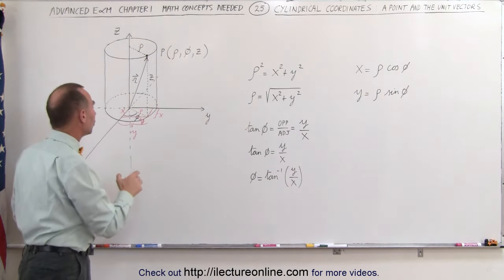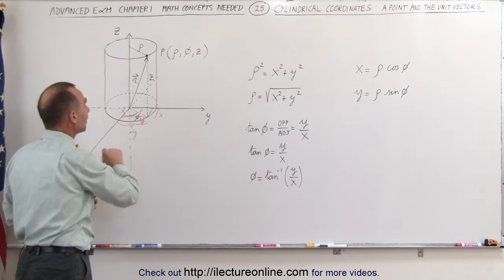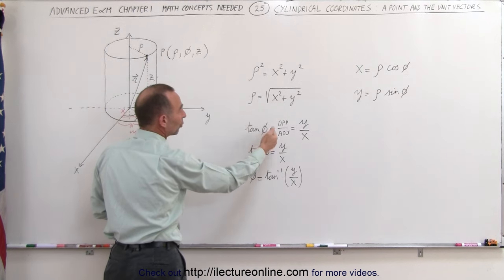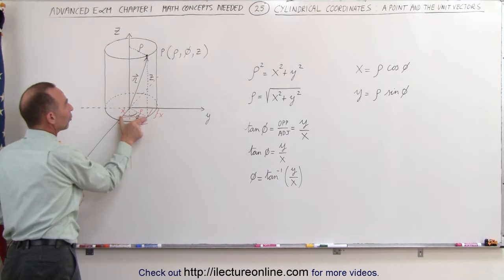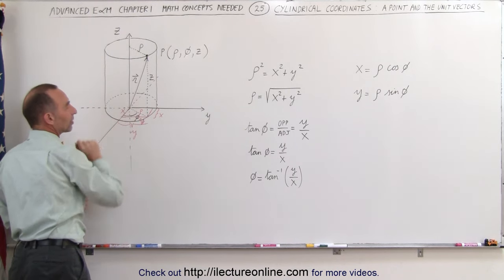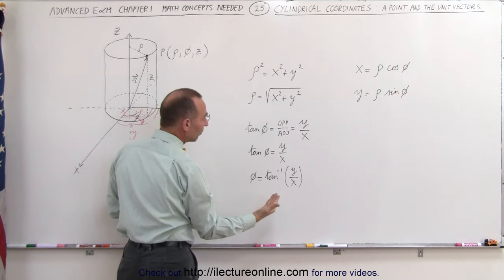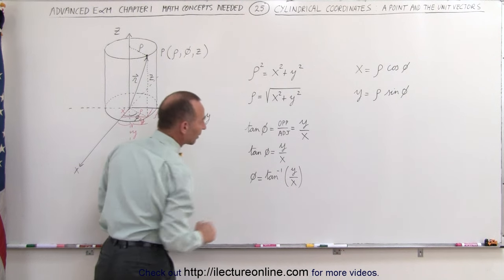Relating the angle phi to x and y, we can simply take the tangent of the angle. The tangent of the angle is defined by the opposite side divided by the adjacent side. The opposite side to the angle is y, the adjacent side here is x, so therefore tan(φ) = y/x, and φ can then be defined as the arctan of y over x.